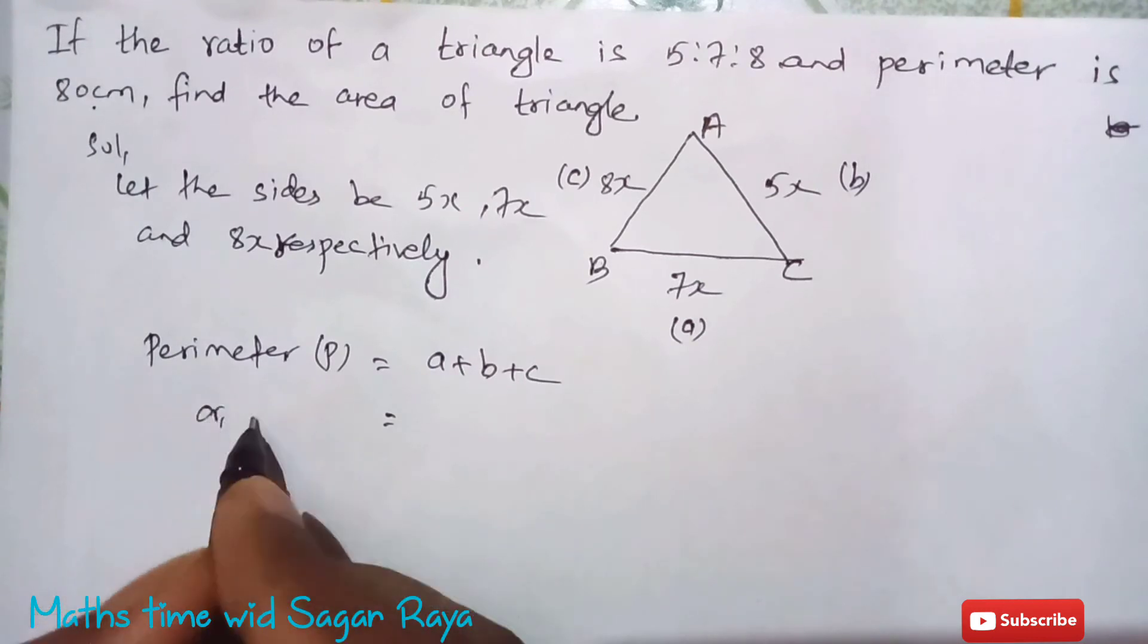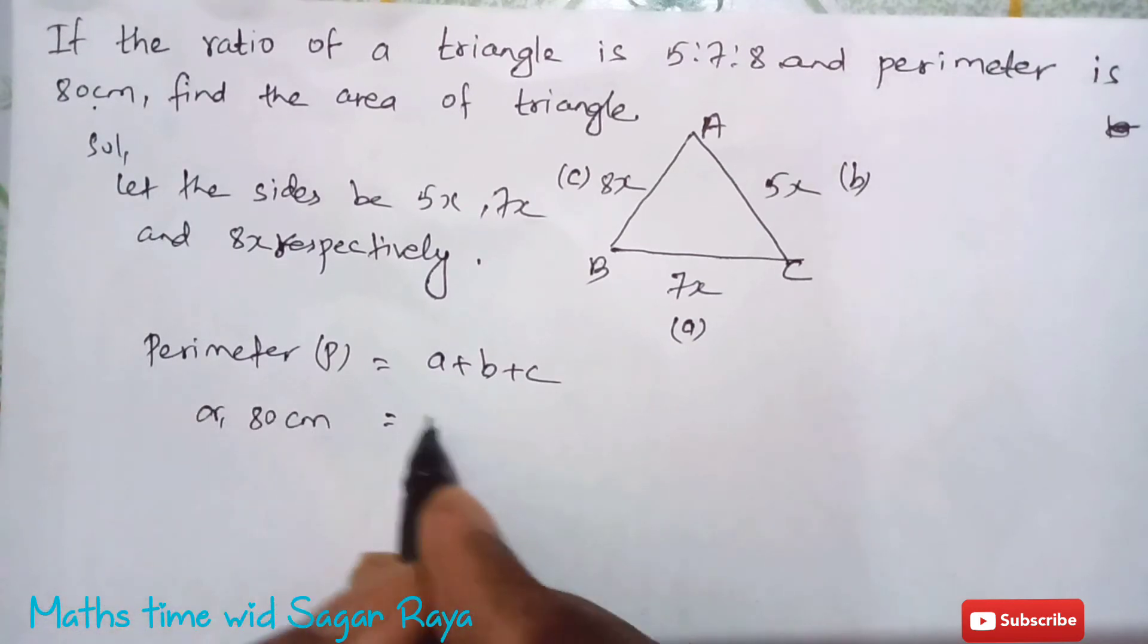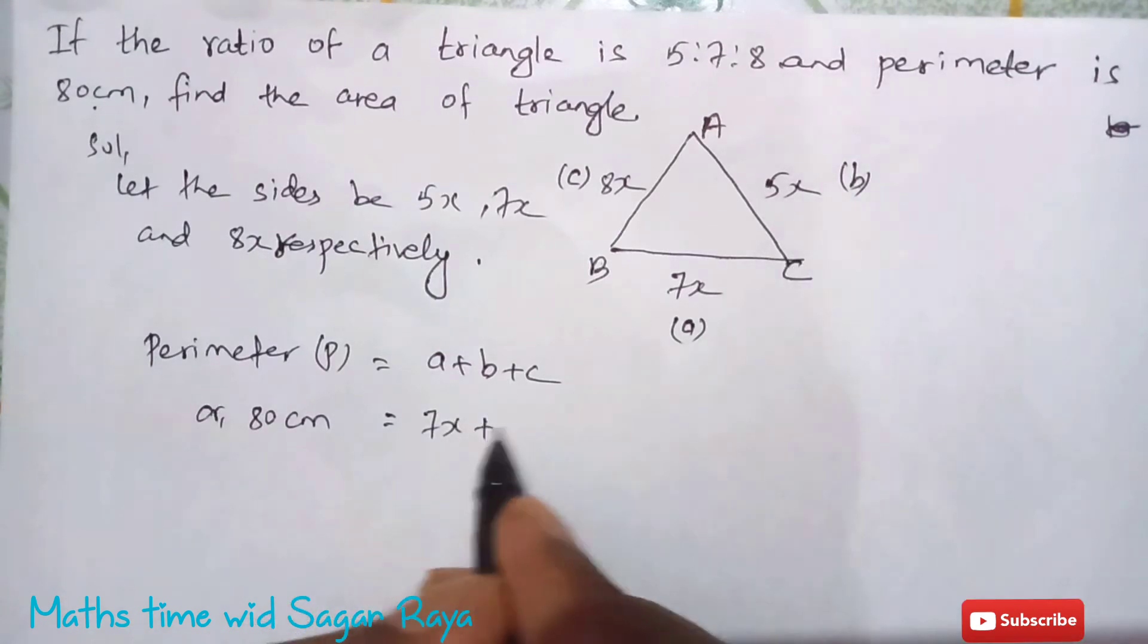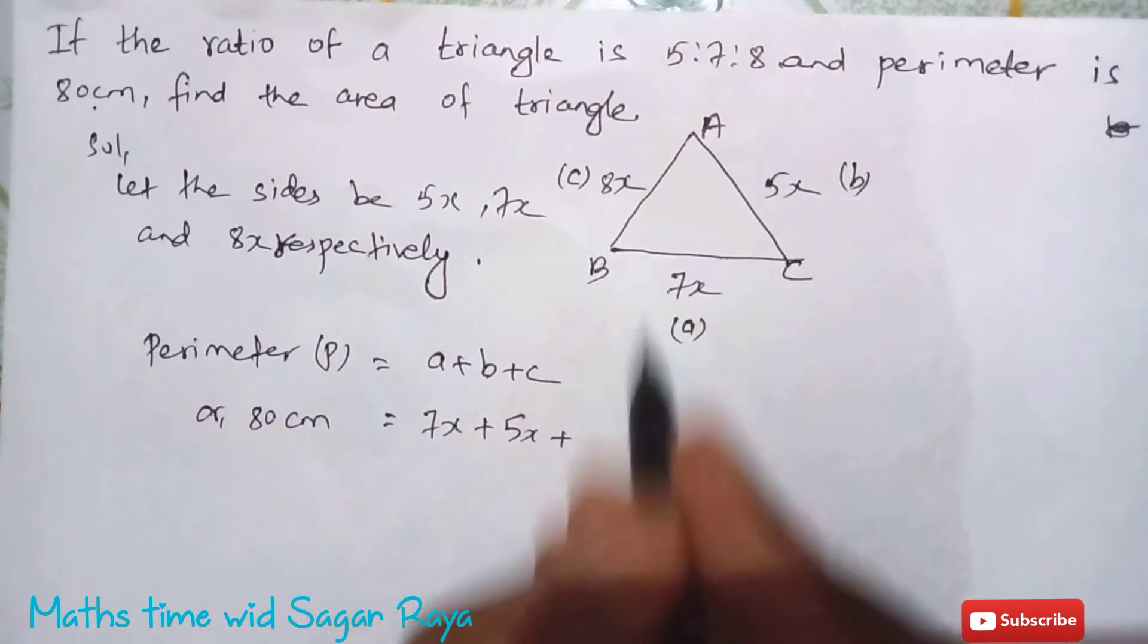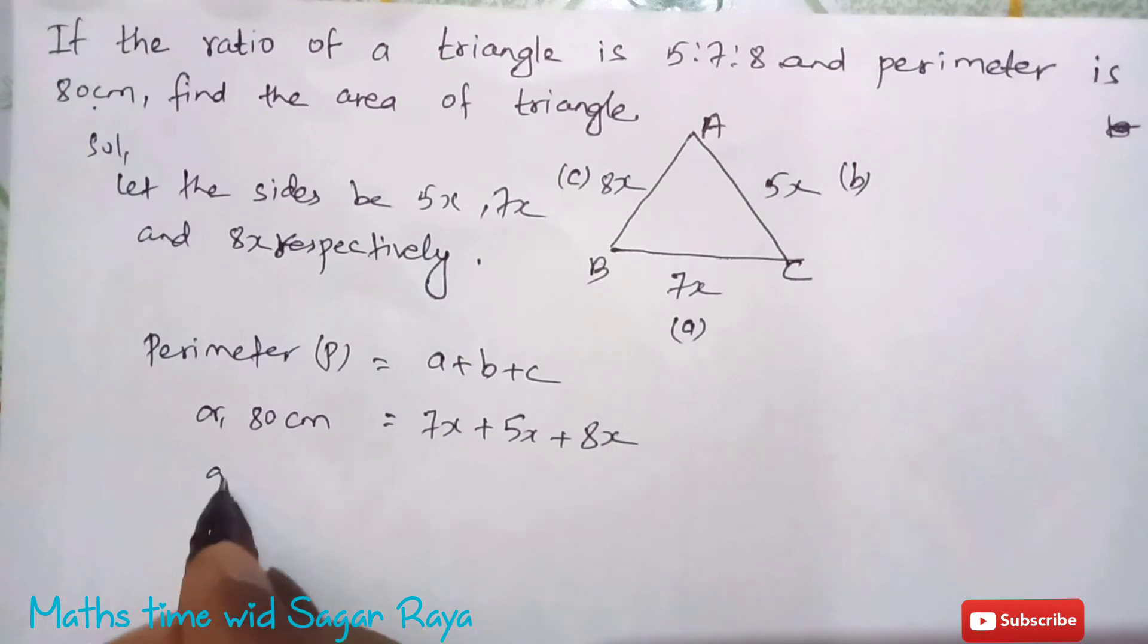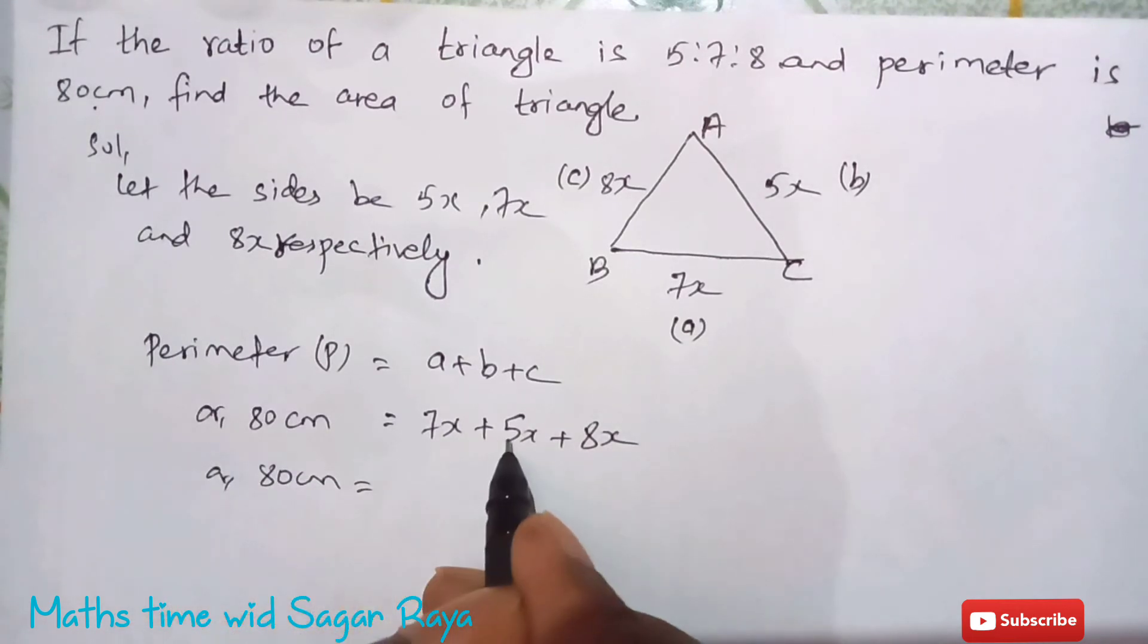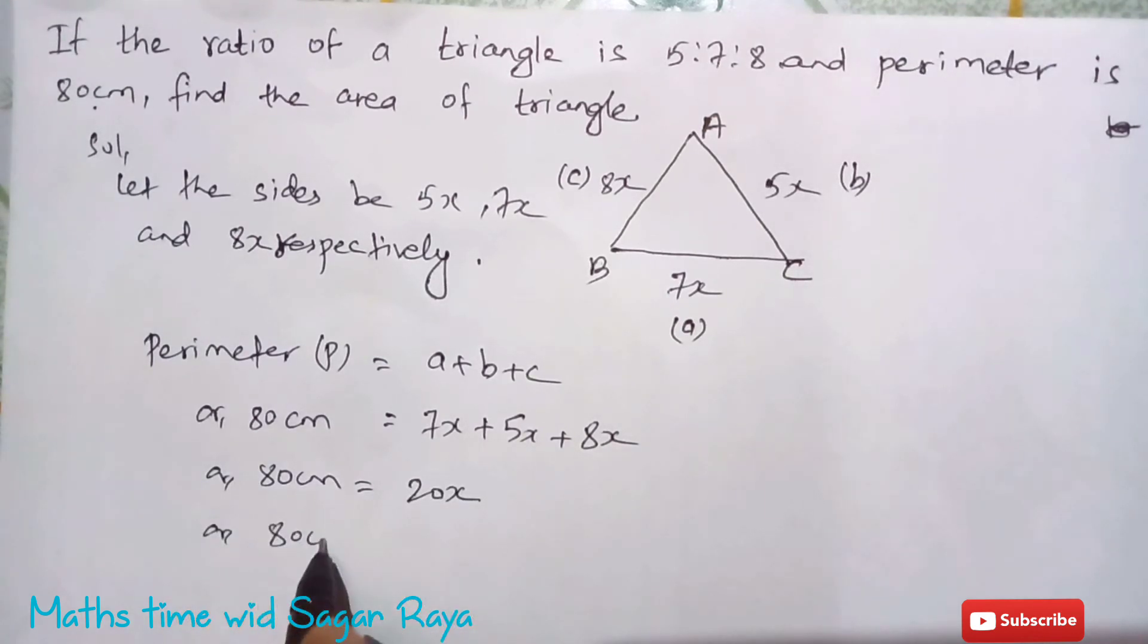Perimeter is given 80 cm and a is 7x plus b is 5x and c is 8x, so 80 cm equals to 7x plus 5x is 12x, 12x plus 8x is 20x, or 80 cm divided by 20 equal to x.